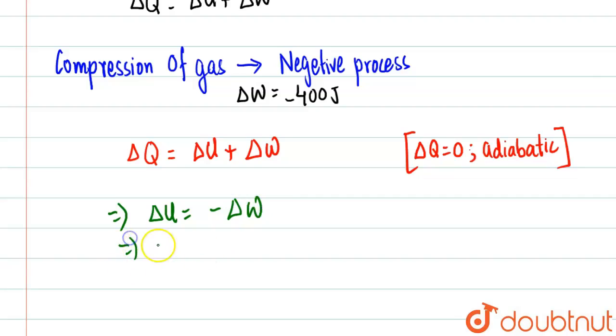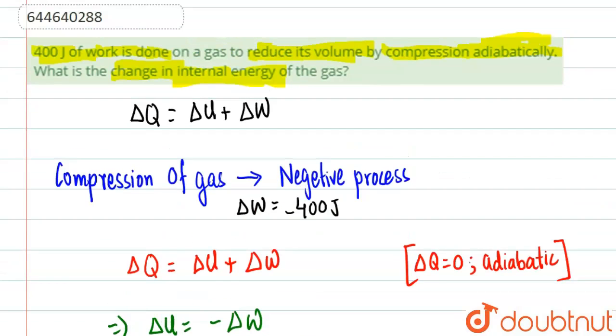So from here, we can have ΔU = -(-400) joules. So basically ΔU must be equal to 400 joules. Our answer is 400. The change in internal energy of the gas is 400 joules. Got it?